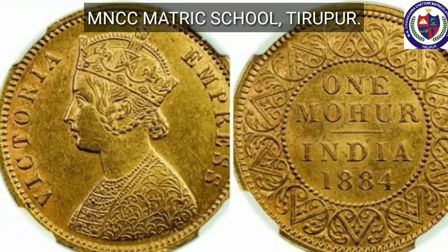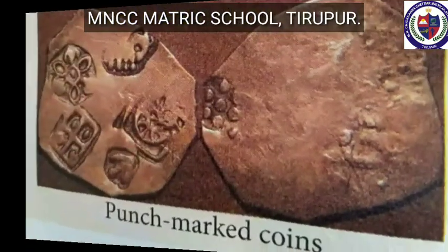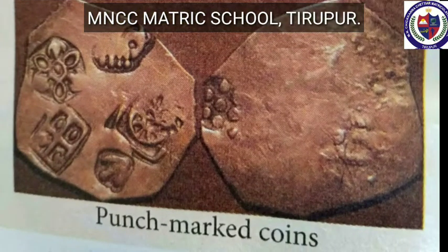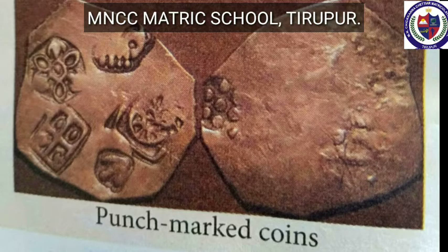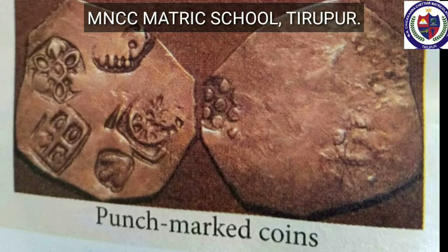Coins as a medium of exchange were introduced for the first time in the Sangam age. The coins of the Cheras, the Cholas, and the Pandyas, punch-marked coins, and Roman coins form another important source of evidence. Punch-marked coins have been found at Kodumanal and Bodinayakanur. Bullion means precious metal available in the form of ingots. Punch-marked coins are the earliest coins used in India, mostly made of silver, with numerous symbols punched on them.